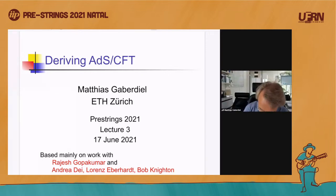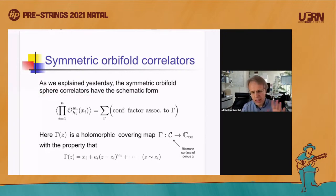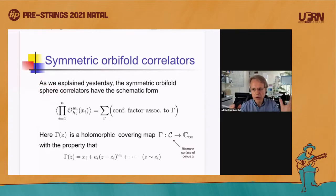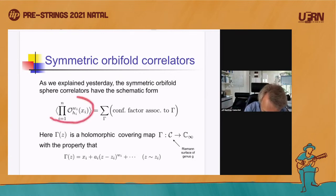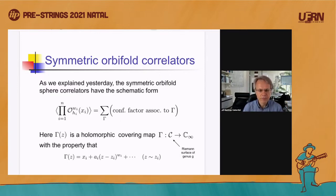Thanks very much. Let me remind you where we got to yesterday, and I'll try to summarize it in a way that makes it a little more transparent. The basic idea is symmetric orbifolds and sphere correlators. From the point of view of the dual CFT, we are always interested in correlation functions on the sphere because the boundary of ADS-3 is a cylinder, so if you compactify it, you get a sphere.